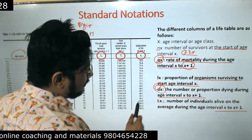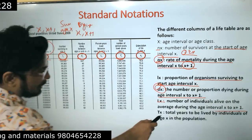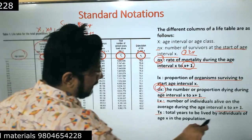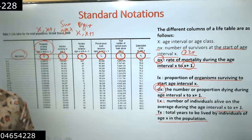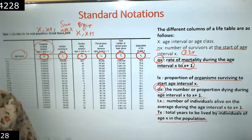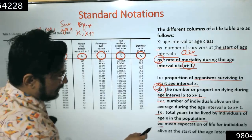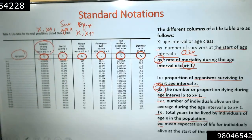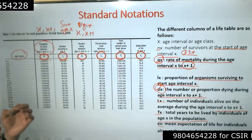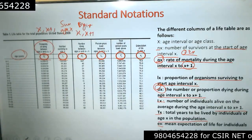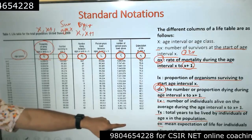Capital Lx is the number of individuals alive on average during the age interval x to x+1 — for example, the number alive on average between ages 10 and 11. Tx is the total years to be lived by individuals from age x in the population — the total number of years that a 10-year-old individual in the human population will survive. Ex is the mean expectation of life for individuals alive at the start of age interval x — the mean life expectancy for the whole human population up to that age.